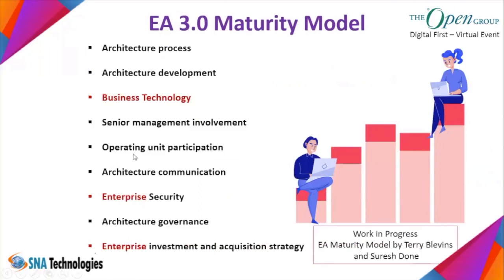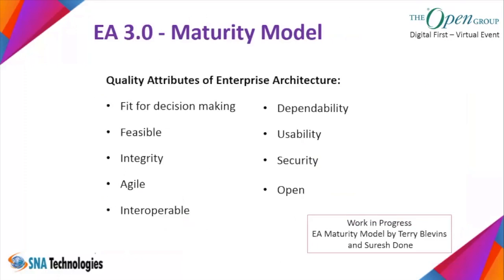On the maturity model for EA 3.0, I'm working with Terry on an updated model based on ACMM. Instead of 'business linkage,' it should be 'business-technology integration,' because technology and business should now be one and the same. Instead of 'IT security,' it becomes 'enterprise security' to cover all security aspects. And quality attributes for any architecture should include being agile, interoperable, usable, secure, and open.